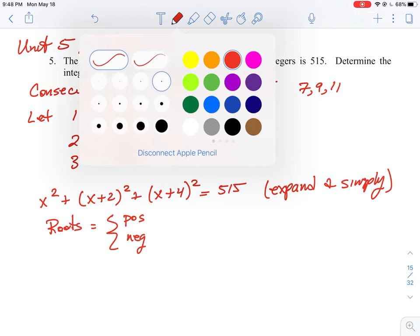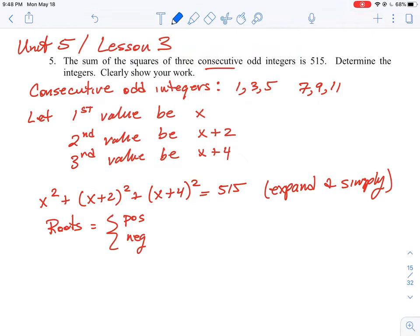Okay now just as an aside there's another way you could look at this question. This is the most straightforward way to do your let statement is to just have x, x plus 2 and x plus 4. But there's no reason you couldn't play around with this a little bit and you could say well what if my third value was x.